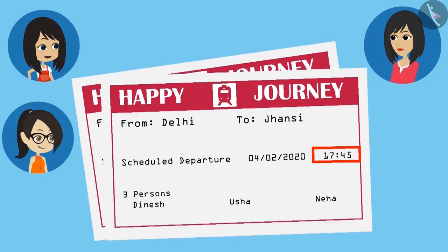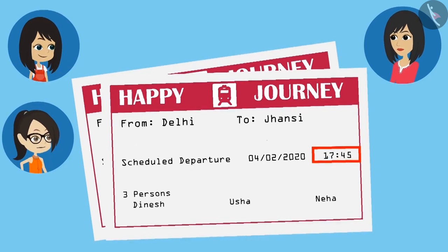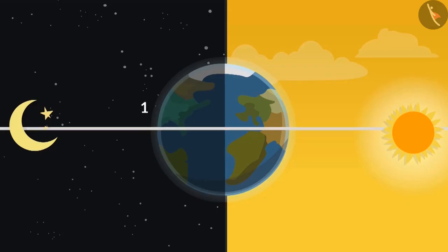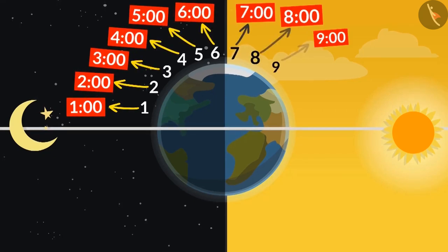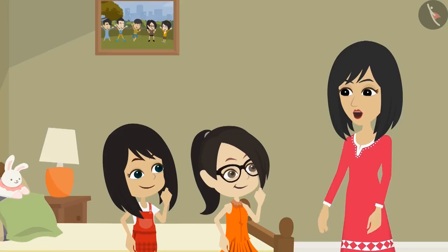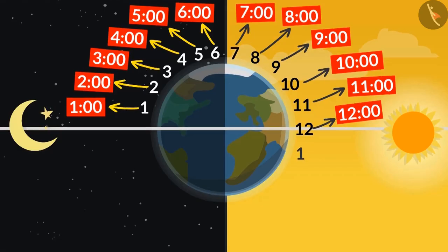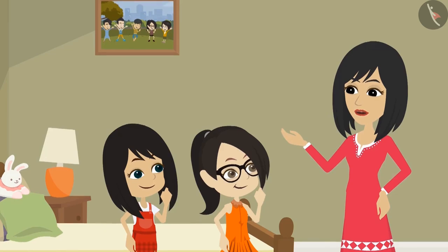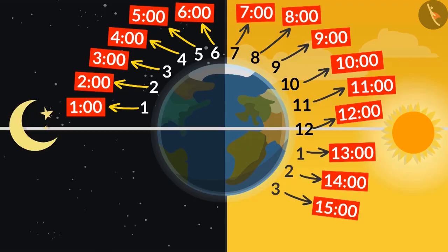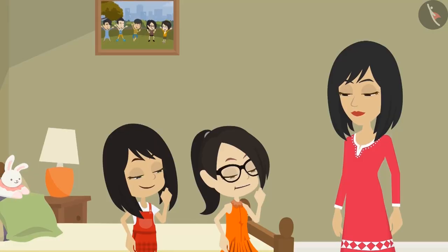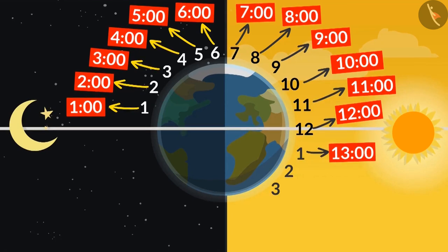Does this mean that this is written in the 24-hour format? Yes. But how will we know whether it is evening or morning time? It is very easy. 1 o'clock at night is written as 1:00, 2 o'clock at night is written as 2:00, and till 12 in the afternoon it is written as 12:00. Now tell me, what is the hour after 12? It is 1. Yes, but when the time is written in 24-hour format, the 12 hours of the afternoon are not written as 1, 2, 3 again. Instead, they are written as 13, 14, 15. So does this mean that in the 24-hour format, 1 o'clock in the afternoon will be written as 13:00?